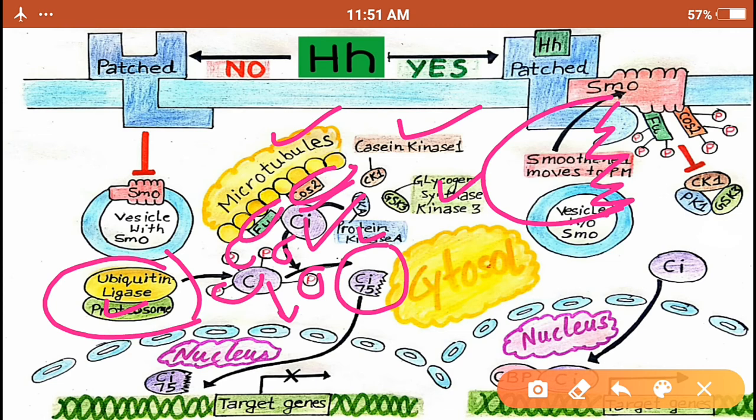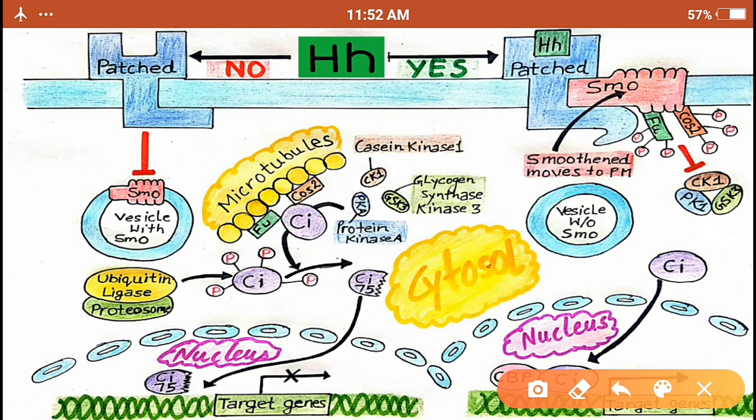The CI-75 thus formed is sent into the nucleus where it acts as a transcriptional repressor and does not allow the transcription of the genes. Now all of this situation is going to be reversed when there is a ligand or in the presence of the ligand.